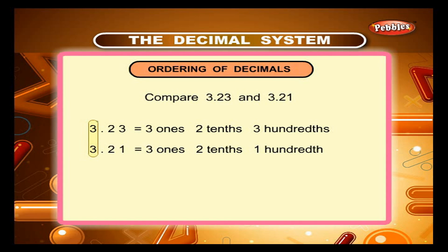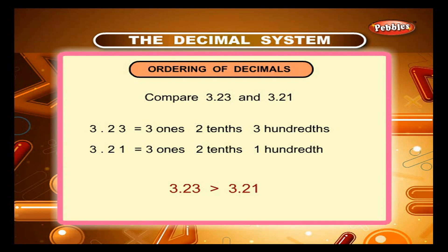Let us see some examples. Compare the whole number portion — you have three ones in both numbers. Compare the tenth digit — you have two tenths in both numbers. Compare the hundredth digit — you have three hundredths in the first number and one hundredth in the second number. Three hundredths is greater than one hundredth. Therefore, 3.23 is greater than 3.21.